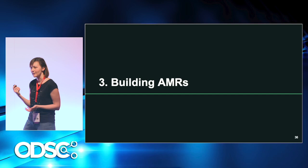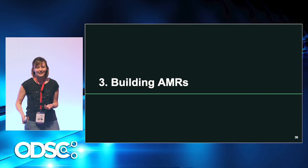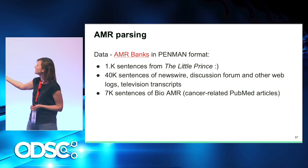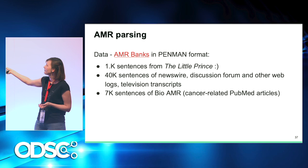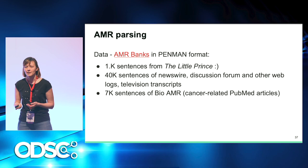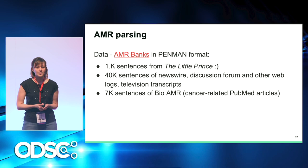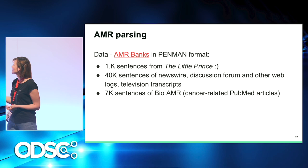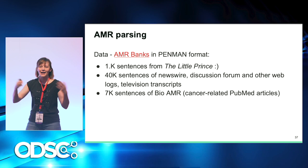Let's see how we can build AMRs automatically, because they seem pretty complex. A human can sit down and annotate, and there are AMR banks. Right now we have 59,000 sentences from newswire, forums, and television transcripts annotated as AMR graphs. The first corpus of AMR graphs was 'The Little Prince.' There's also a corpus of 7,000 sentences of bio-AMR for text mining in the biomedical domain.